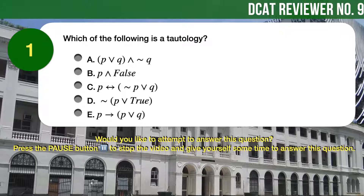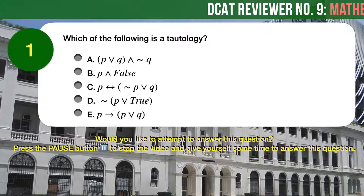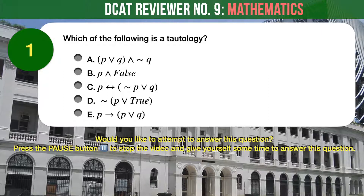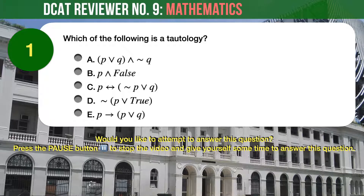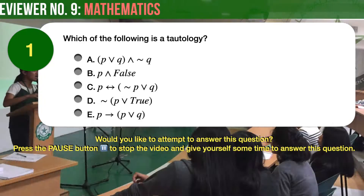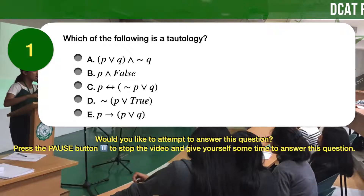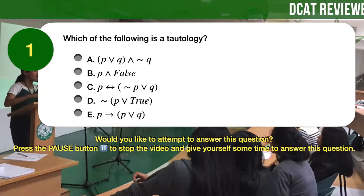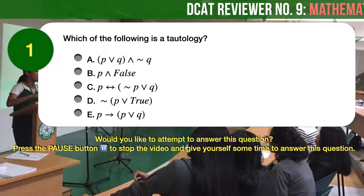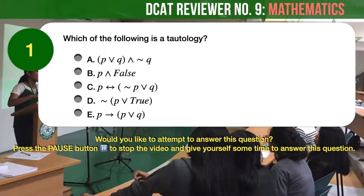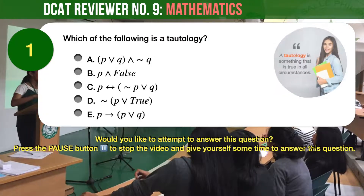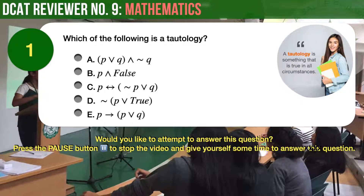Question number 1: Which of the following is a tautology? Before we proceed to answer this question, we need to know what a tautology is. A tautology is something that is true in all circumstances.